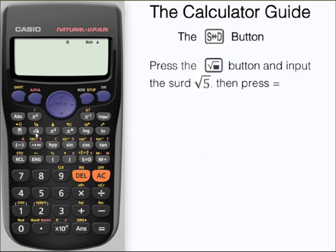Use the square root button here and input 5. So we want to find the square root of 5. If we press equals it should give us the exact answer, a surd form √5.